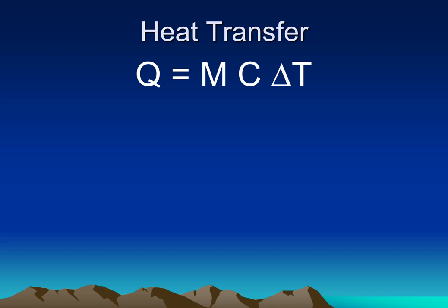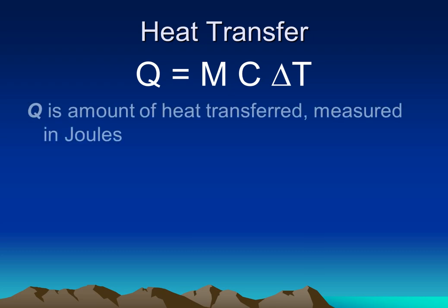Each one of the variables here stands for something different. Q stands for the amount of heat transferred into an object or out of an object. The SI unit for heat is joules, and that's the unit that we're going to use in this class.